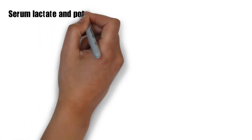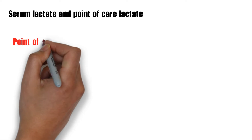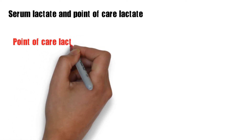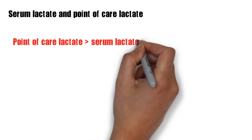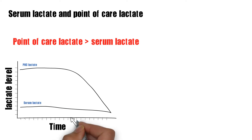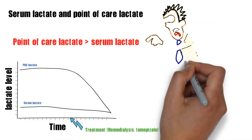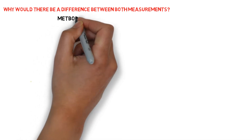During your workup, you accidentally obtain two lactic acid values — one from the point-of-care machine in the ICU and the other sent to the lab. Interestingly, you notice a significant difference between the point-of-care lactic acid level and the serum lactic acid level. So why would there be a difference between both measurements, and could that potentially be of any clinical value?